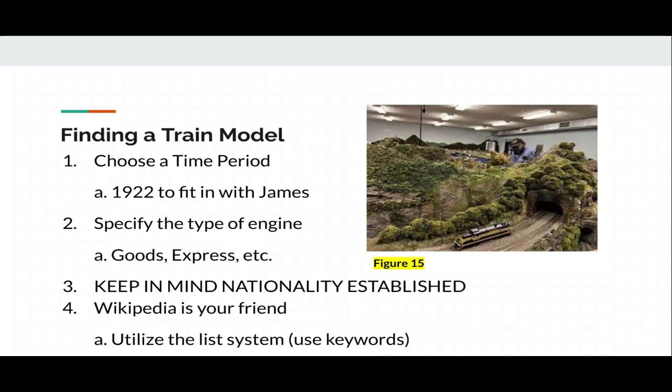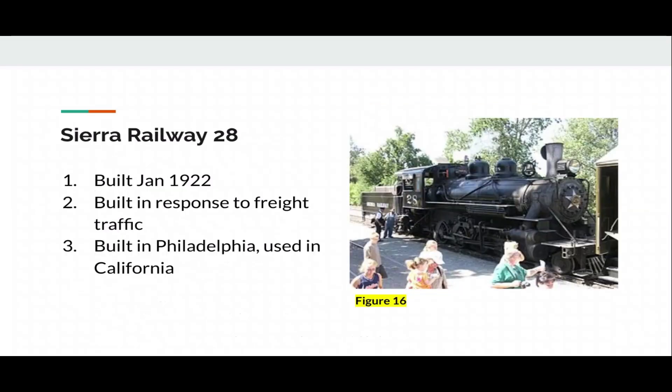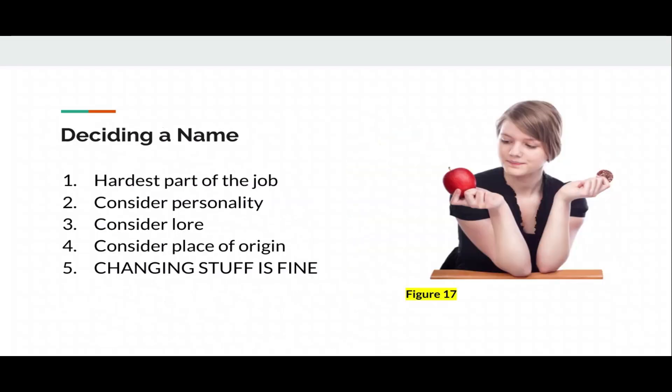And I chose Sierra Railway 28. It was built in 1920. I mean, January 1922. In response to freight traffic. Built in Philadelphia, used in California. So that fits all the questions.